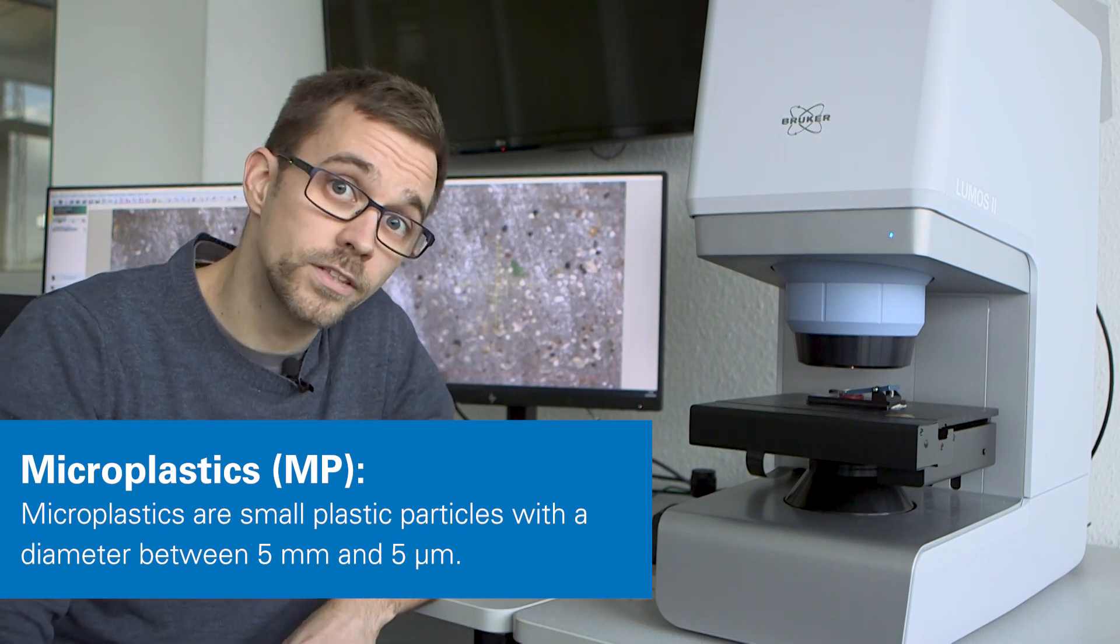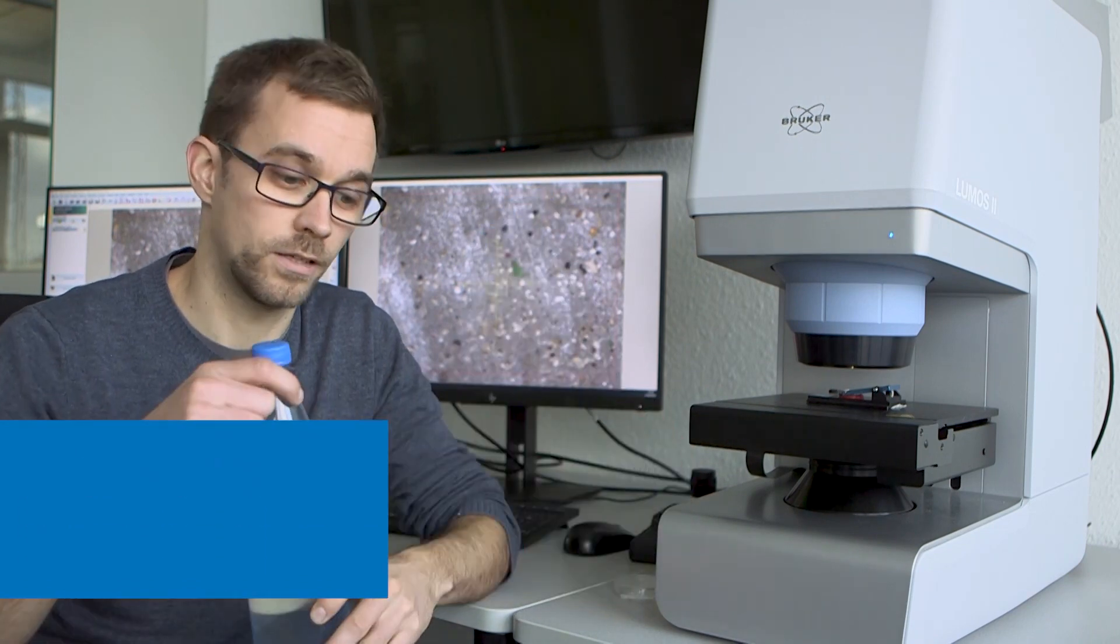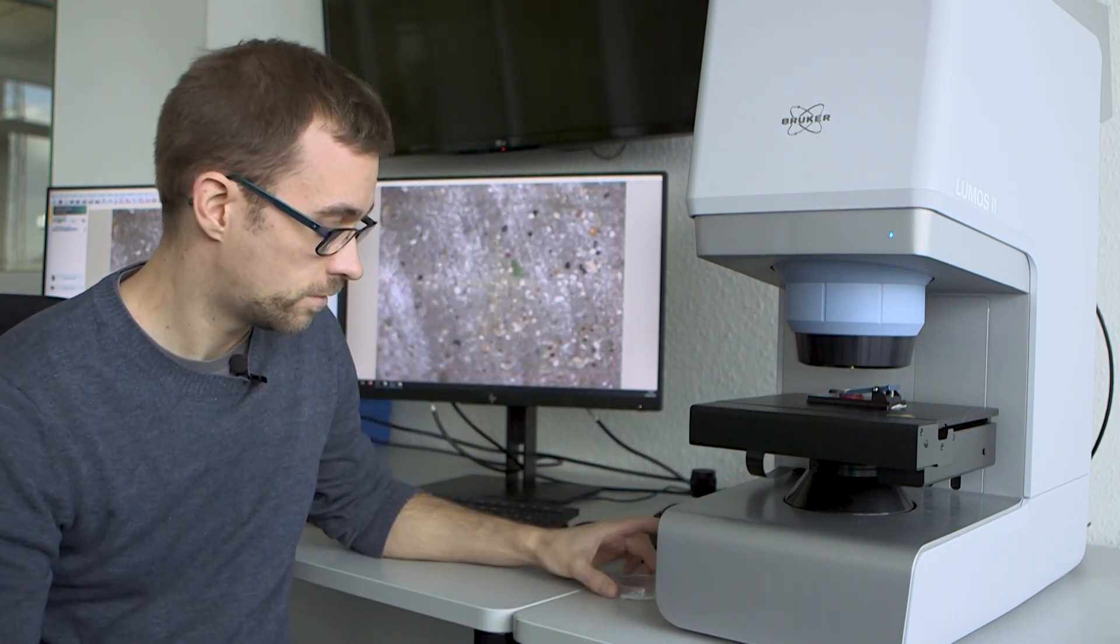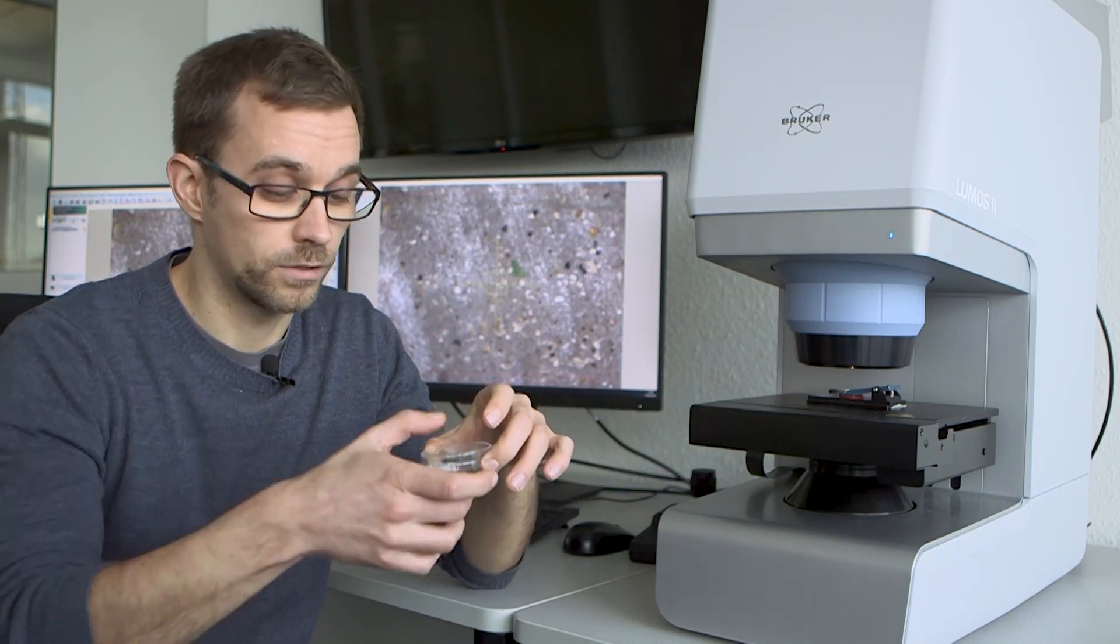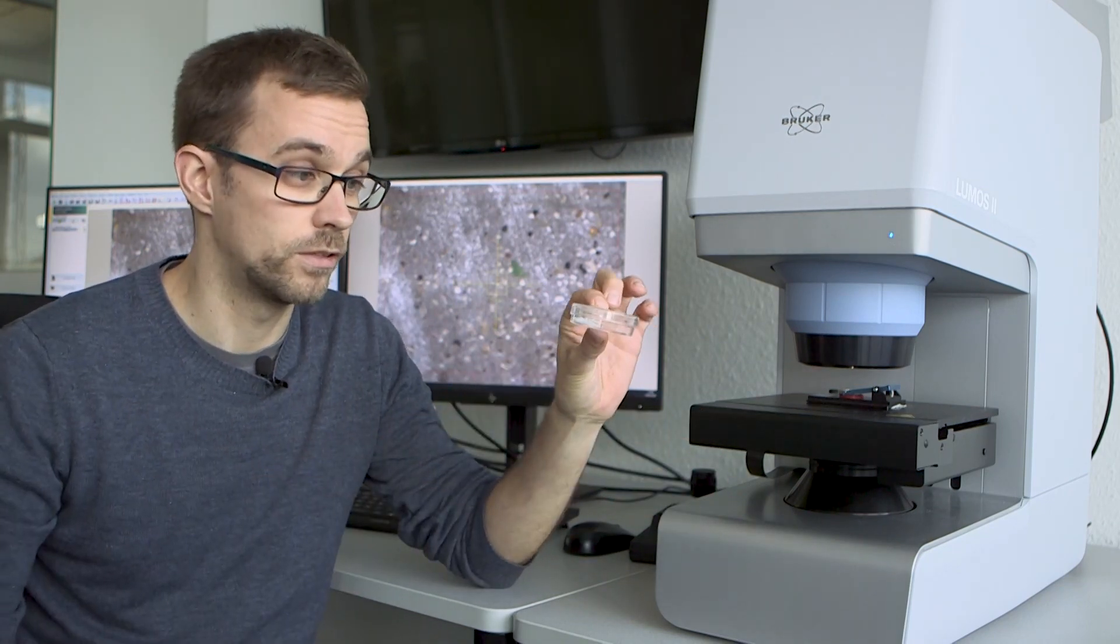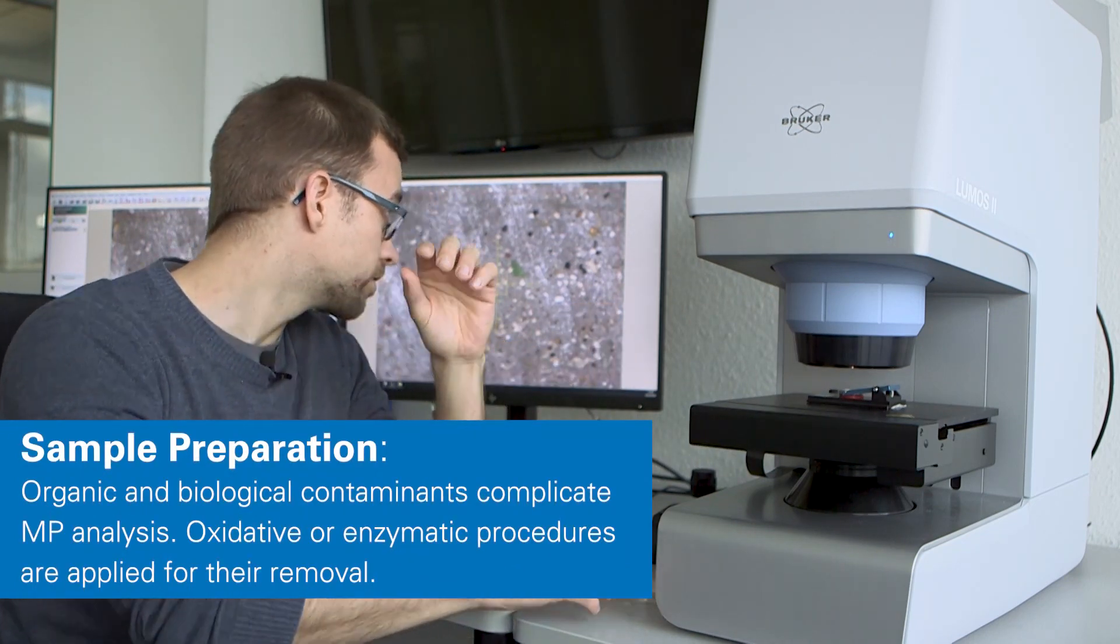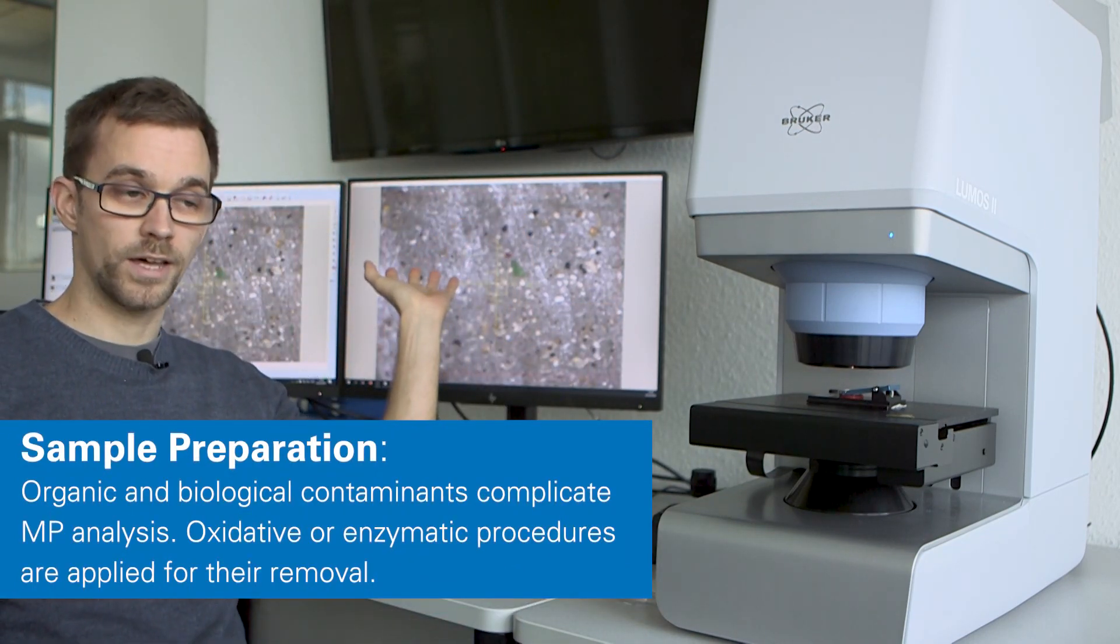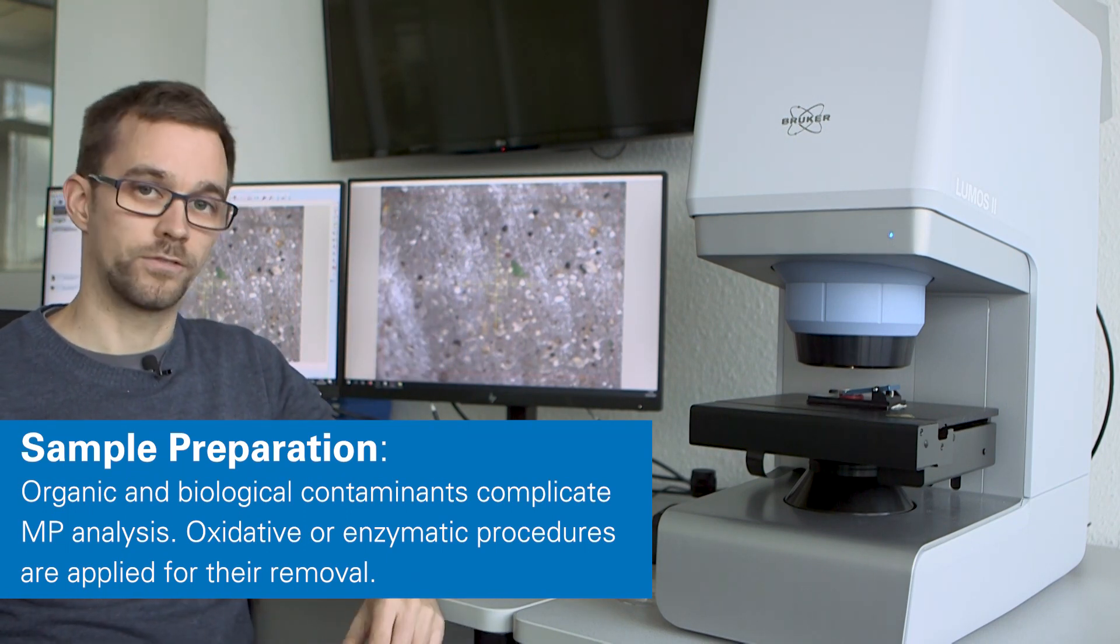There are several different types of samples like bottled water that just needs to be filtered and then can be analyzed, sea salt or table salt that can be analyzed towards its content of microplastic that needs to be dissolved first and then can be filtered, or more complex samples like sediments of riverbed that need pretreatment like enzymatic digestion or oxidative treatment.